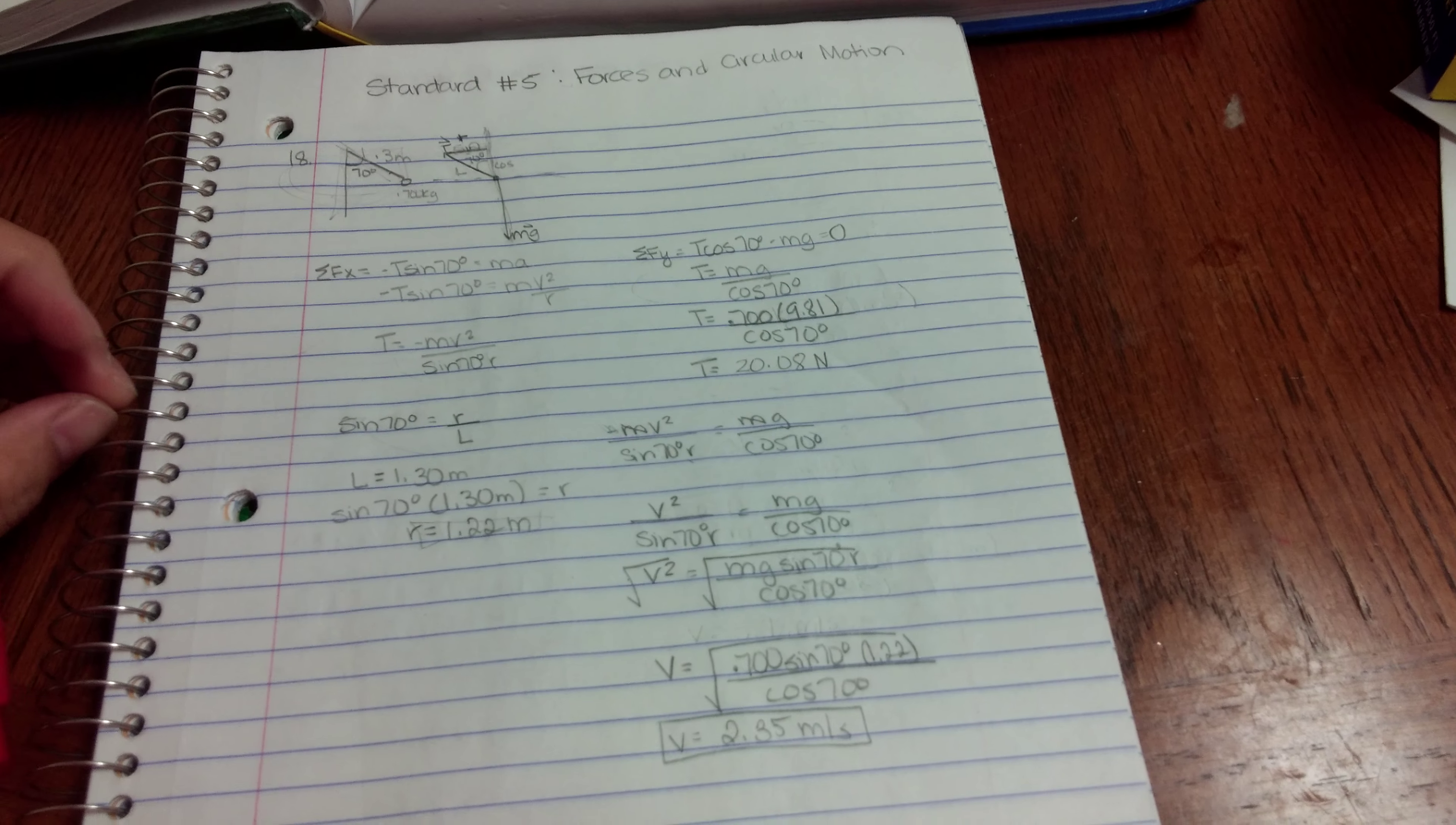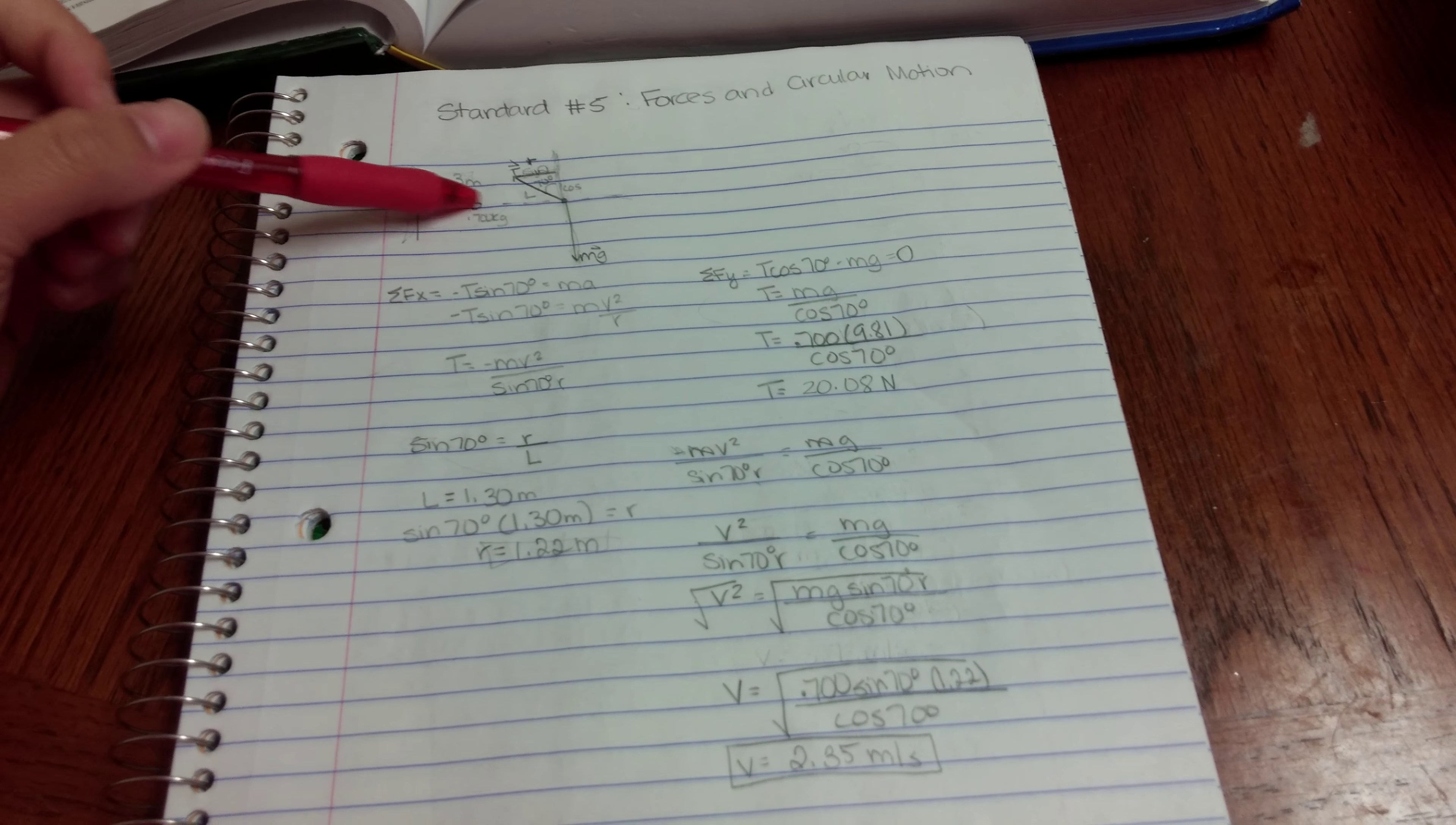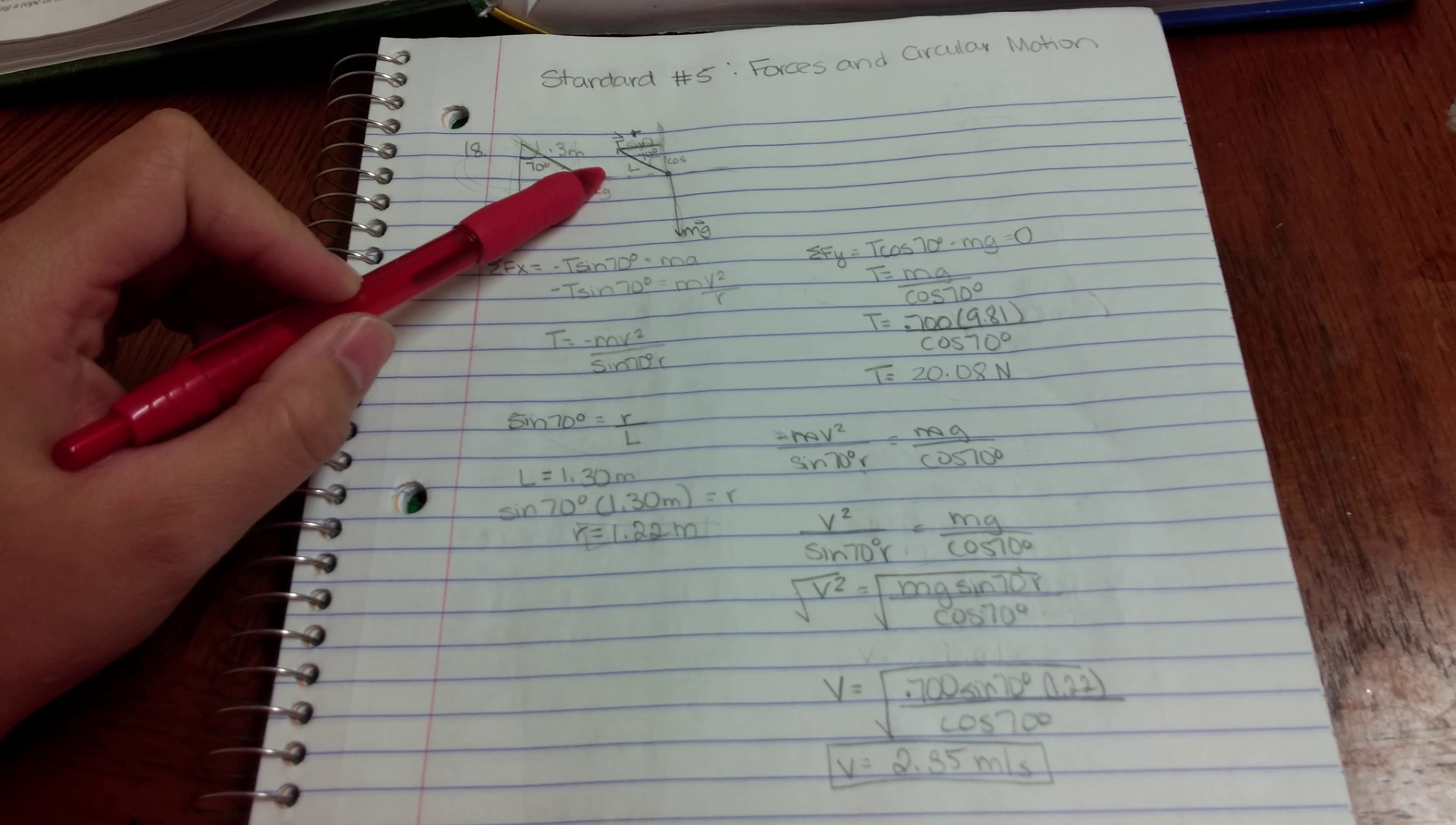I am doing Standard 5 on Forces and Circular Motion. I picked number 18 out of Chapter 5. This question tells me there's a ball that weighs 0.7 kilograms that's attached to a rope that is 1.3 meters long.